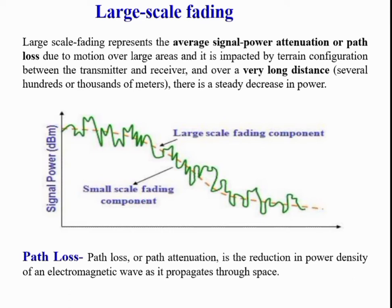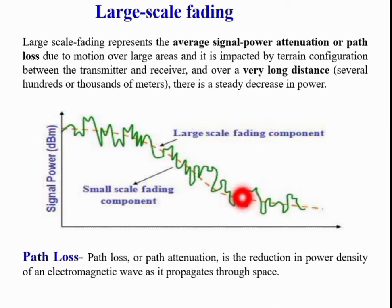For better understanding of large scale and small scale fading, consider this graph. The yellow line reflects large scale fading — there is a steady decrease in signal power over a long distance or with respect to time. The green line shows small scale fading, where there is a rapid fluctuation in signal power with respect to time or distance. Large scale fading represents an average signal power attenuation or path loss due to motion over a large area, impacted by terrain configuration between the transmitter and receiver. Over long distances — several hundred or thousands of meters — there is a steady decrease in power.